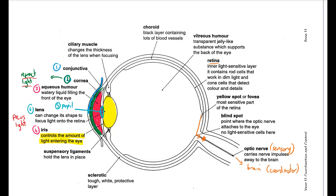Two structures help move or change the shape of the lens: the ciliary muscle and the suspensory ligaments, both given the same label. The ciliary muscle can either contract or relax, and attached to it are the suspensory ligaments, which go all the way around the eye. When the muscle contracts, it either relaxes or pulls those ligaments, changing the shape of the lens.